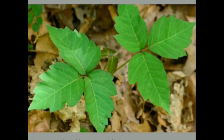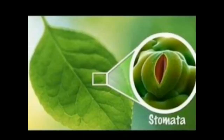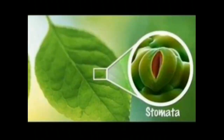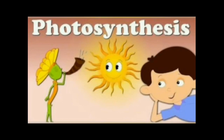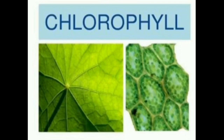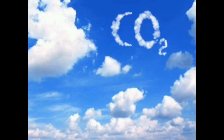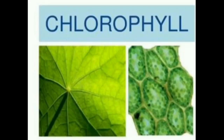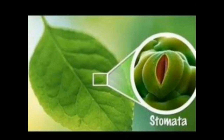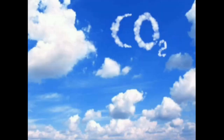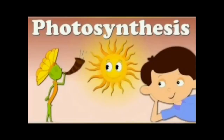Now let us see two main things which are present in the leaves. The first one is chlorophyll and the second one is stomata. Chlorophyll and stomata play an important role in the process of photosynthesis. The chlorophyll pigment absorbs the heat from the sunlight, and stomata absorb carbon dioxide from the atmosphere.